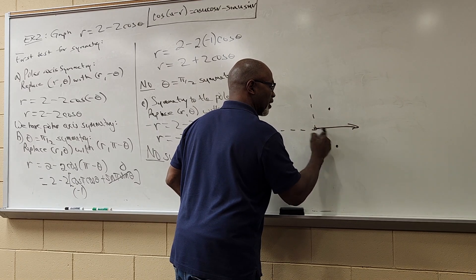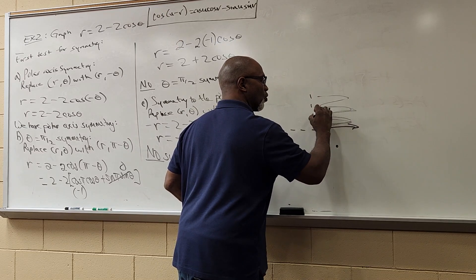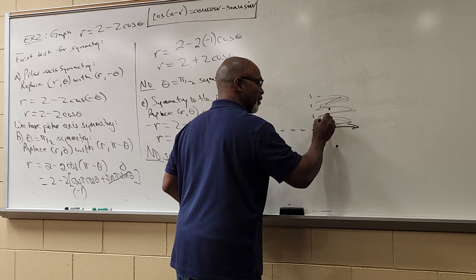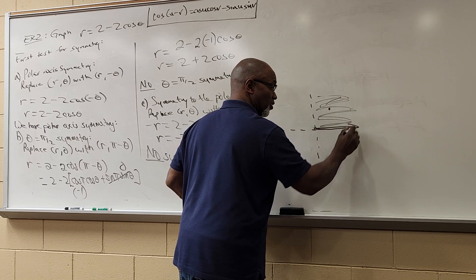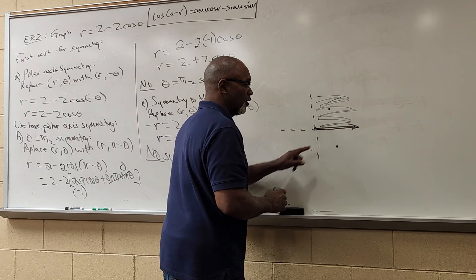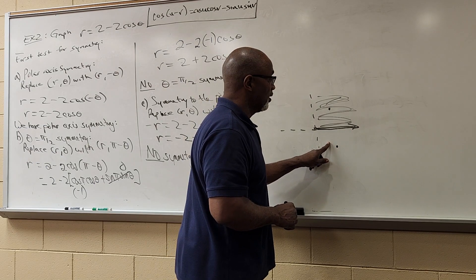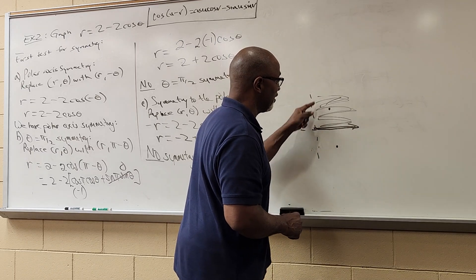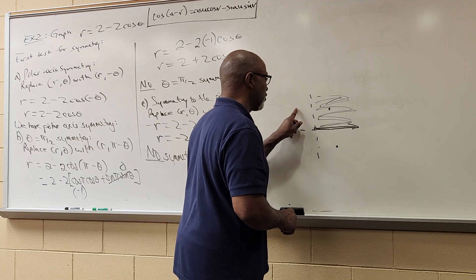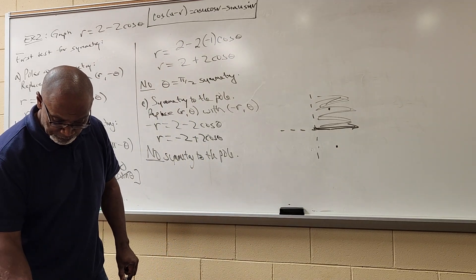Polar axis symmetry means if I have a point, I can reflect across the polar axis and get the corresponding graph point. So I'll get the graph in the first quadrant and the reflection for free. I won't need to find any points in what used to be the fourth quadrant in rectangular coordinates — symmetry gives me that half automatically.